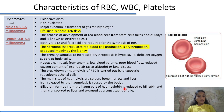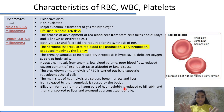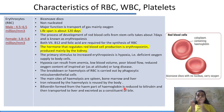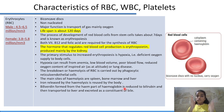Summary of RBC key points: biconcave discs, non-nucleated, lifespan 120 days. Their formation process is erythropoiesis (minimum 7 days). Vitamin B12 and folic acid are necessary for synthesis. Erythropoietin regulates production. Primary stimulus to erythropoiesis is hypoxia. Hemolysis is carried out by reticuloendothelial cells; main sites are spleen, bone marrow, and liver. Biliverdin is reduced to bilirubin, transported to liver, and excreted in bile.